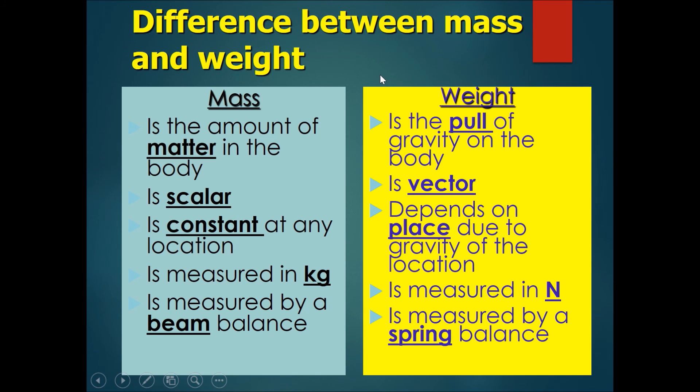Some differences between mass and weight. Mass is the amount of matter in a body but weight is the pull of gravity on the body which is a force. Mass is scalar while weight is a vector. Mass is constant at any location.